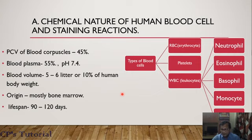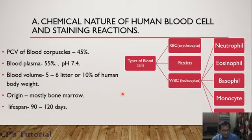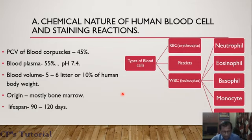Blood is a connective tissue — it is mobile, meaning it has fluidity, making it a fluid connective tissue. Its fluidity is maintained by blood plasma, which remains in the system at 55 percent ratio, while the other component, blood corpuscles, remains at 45 percent ratio. This 45 percent ratio is the packed cell volume. Without blood plasma, the total volume is about five to six liters, or about 10 percent of the human body weight.